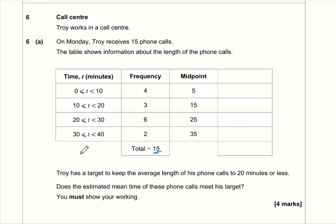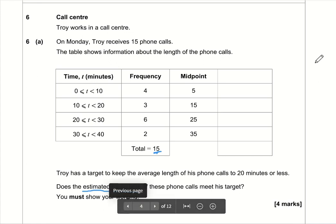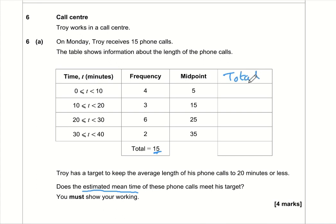Troy's got a target to keep the average length of calls to 20 minutes or less, and we need to work out an estimated mean time. It's estimated because we're dealing with grouped data. We don't know the exact length of each call, so the best we can do is assume they were all exactly halfway between the endpoints. That's why we've got this midpoint column.